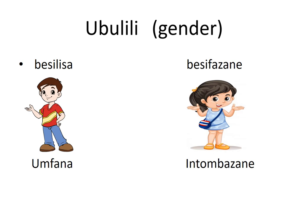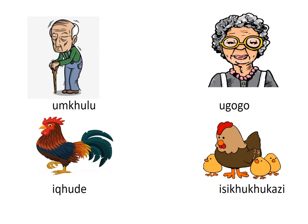The opposite of umfana is intombazane. The opposite of umama is ubaba. The opposite of upudi is usisi. And umkulu — the opposite is ukoko. As you can see, there is umkulu and ukoko as an opposite gender pair.